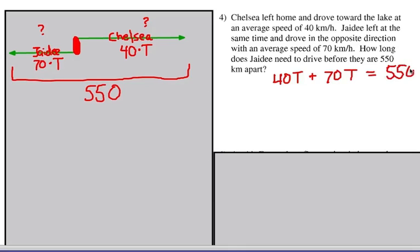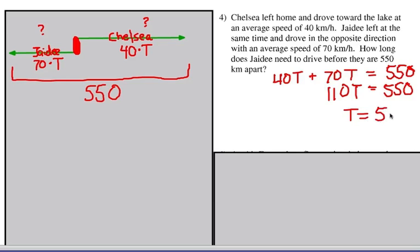Adding like terms: 40T plus 70T is 110T, and that equals 550 kilometers. Dividing both sides by 110, T equals 5 hours. They both traveled 5 hours to end up 550 kilometers apart.